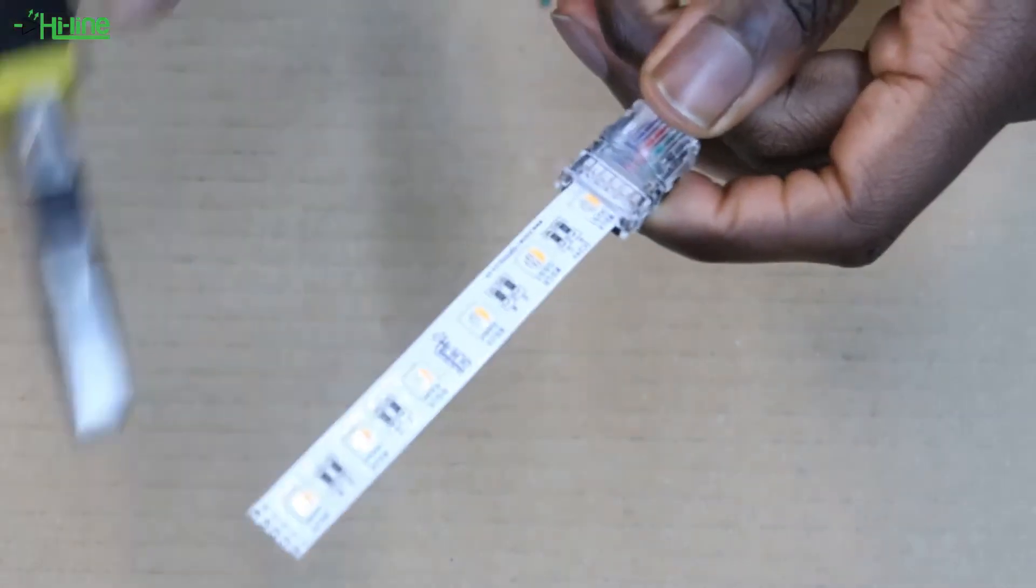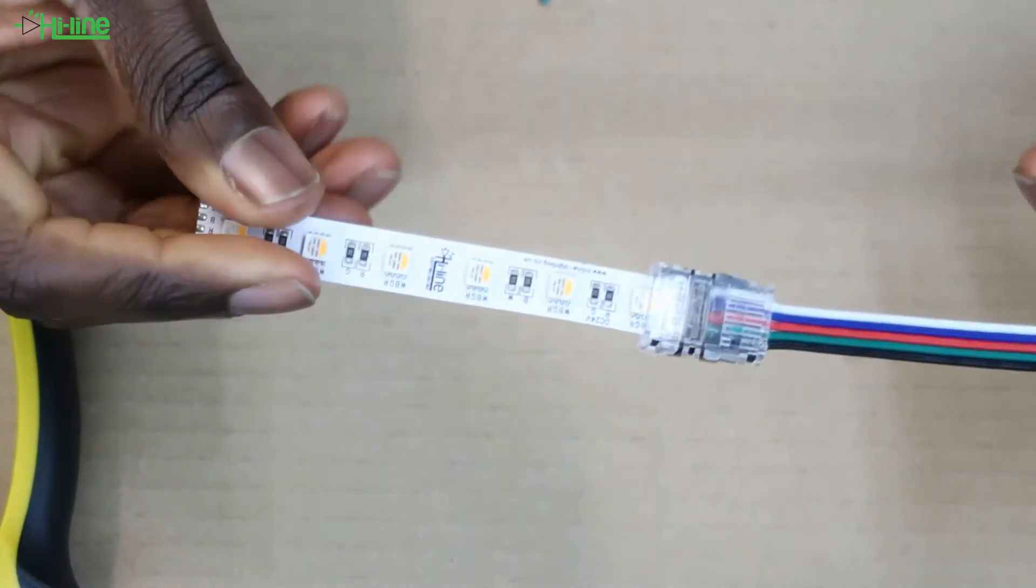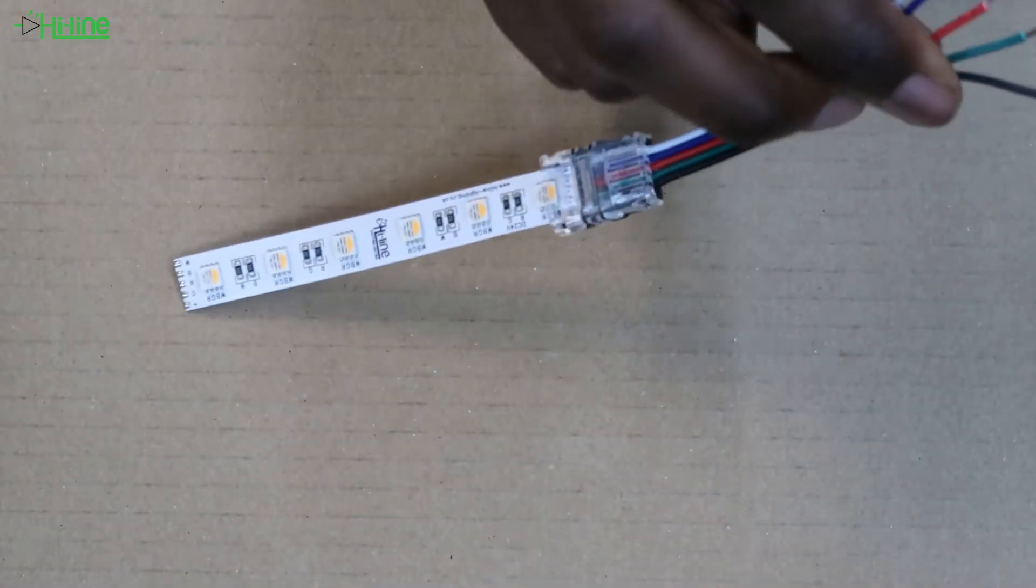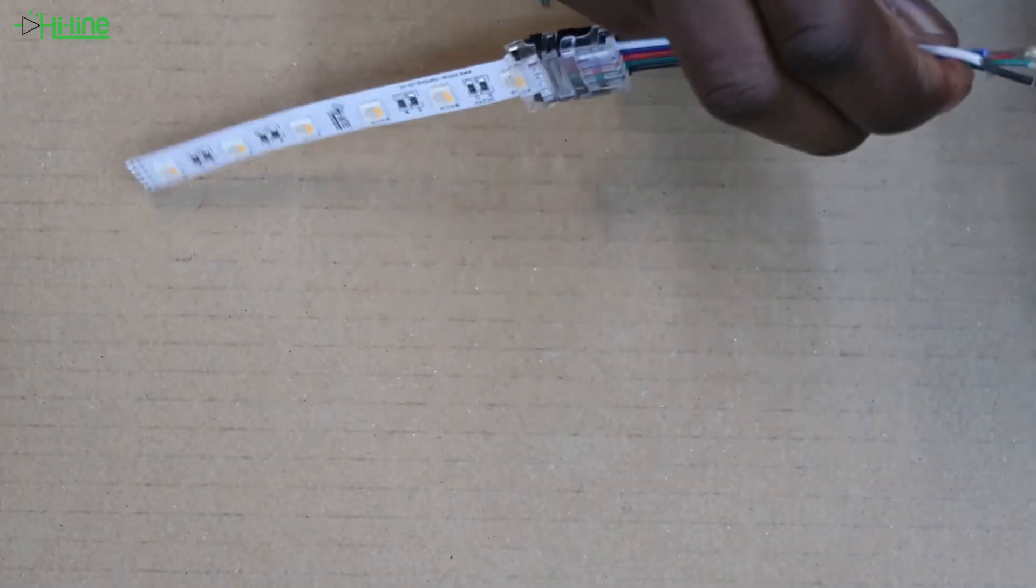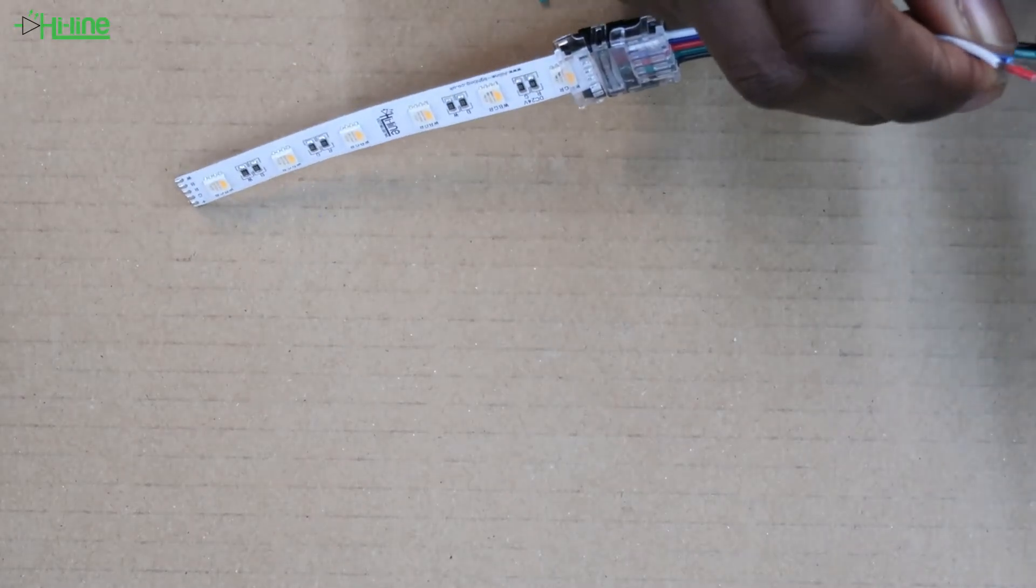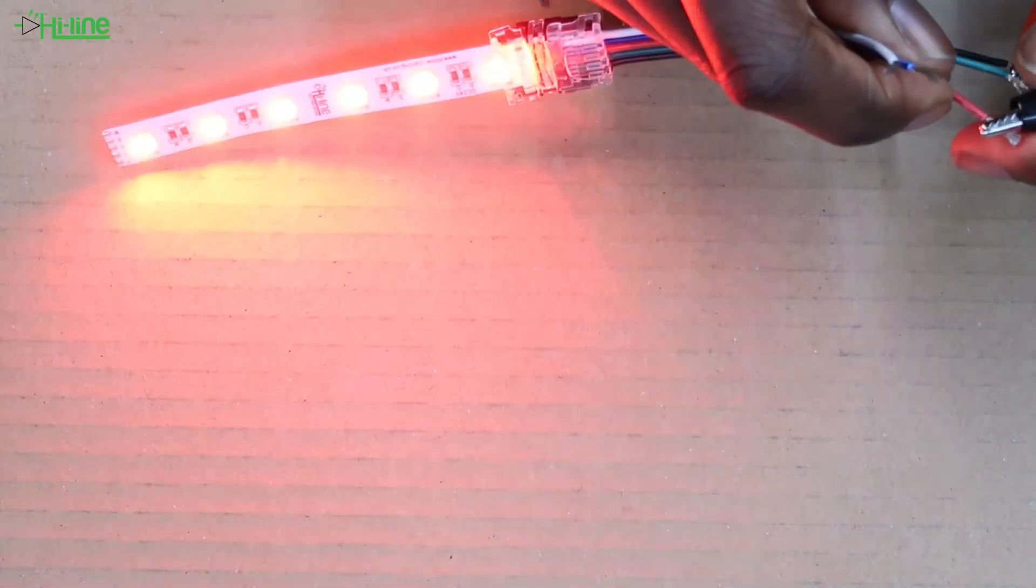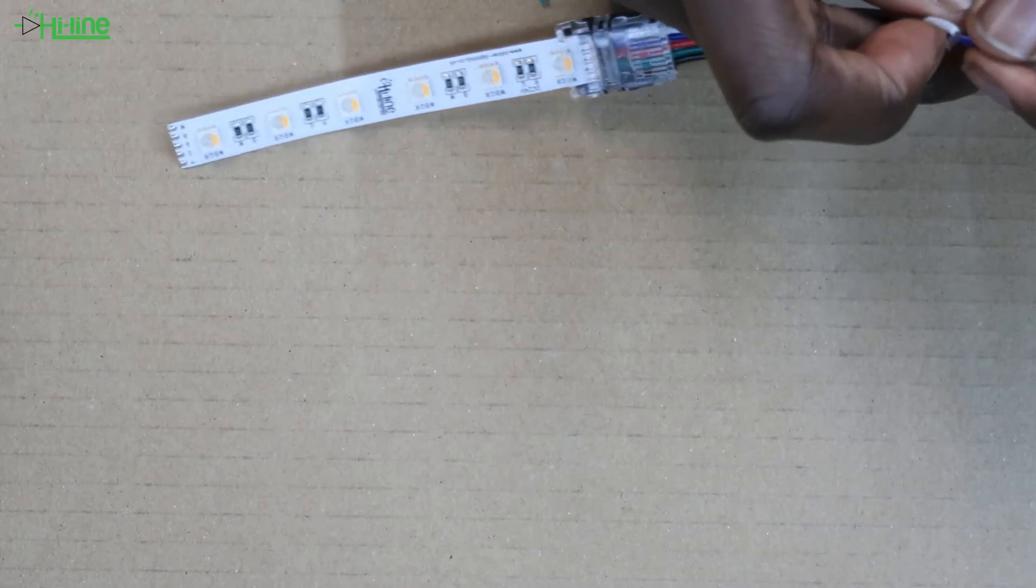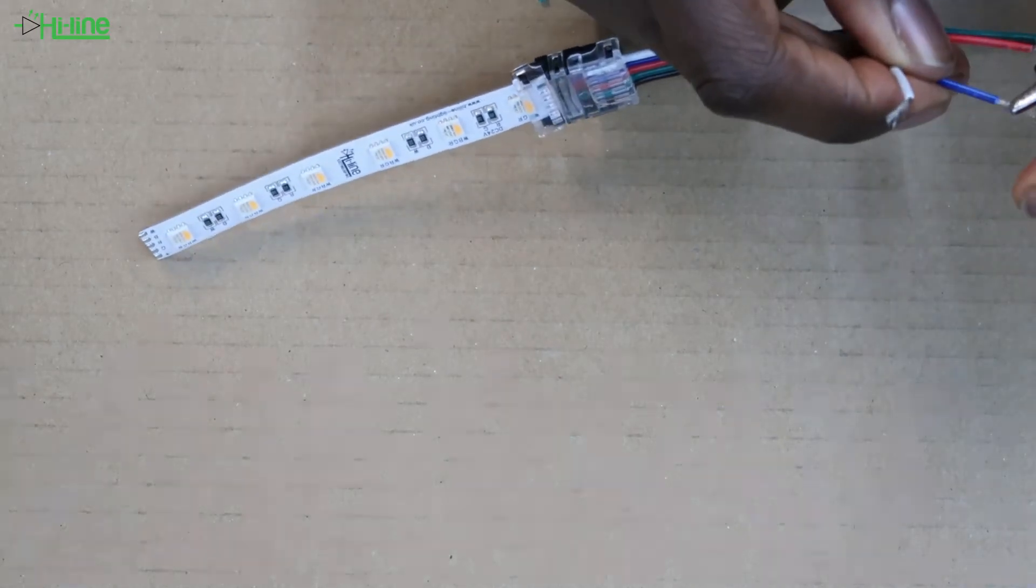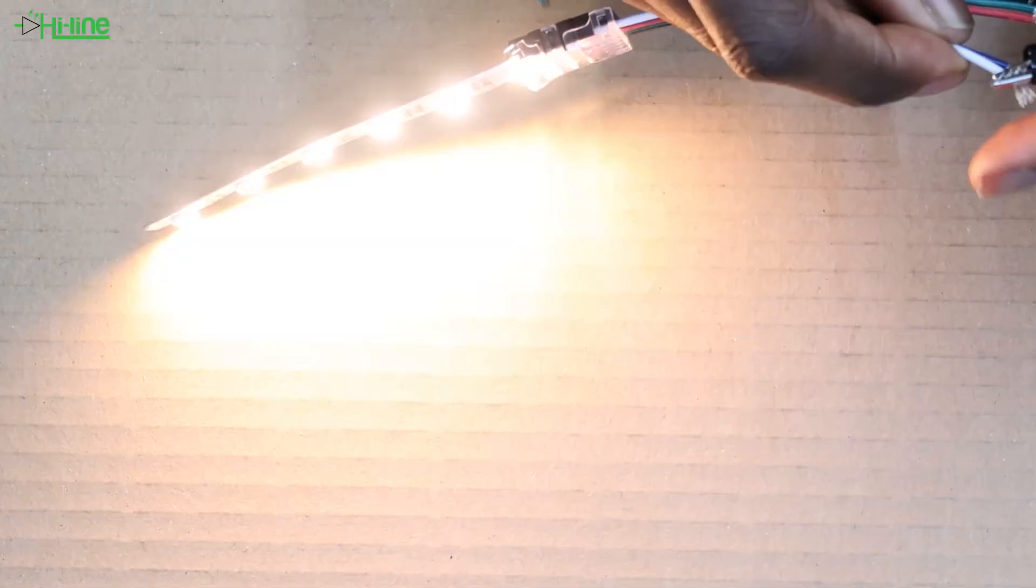After you've done that, we do strongly recommend to test the LED strip before you complete your installation. That is just to make sure that the PCB of the LED strip is making full contact with the connector. What you can do is grab your 24 volt output of your LED driver, connect the positive side, and then use your negative to test each channel of the LED strip.